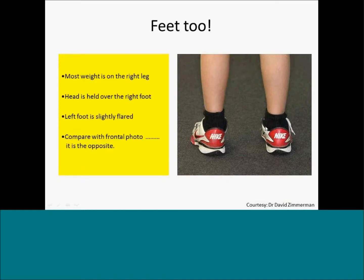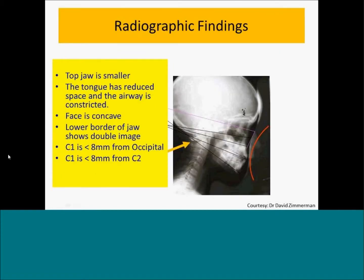Looking at the rest of the body, this compensation goes all the way down to the legs. The head is held over the right foot, and the left foot is slightly flared — the opposite of what we saw in the frontal photograph. We can confirm these findings radiographically: the top jaw is smaller than the lower jaw, the tongue has reduced space, and there is a constricted airway. The facial profile is concave as stated. The lower border of the mandible shows a double image confirming asymmetry, and the distance between the occipital bone and the atlas, as well as between the atlas and axis, has been decreased.